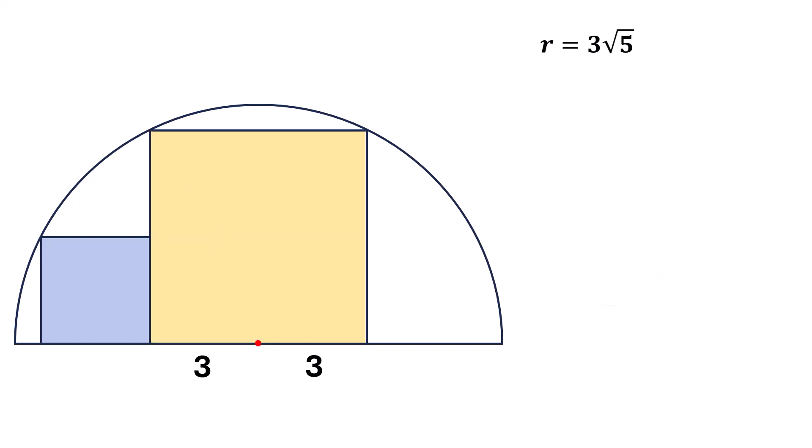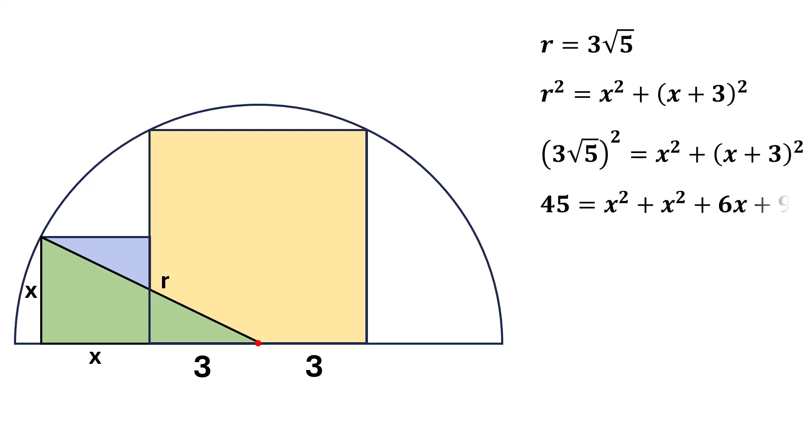Suppose the length of the small square is x. This line represents the radius of the circle. Let's call it r. Now, applying the Pythagorean theorem to this green triangle again, we get r squared equals x squared plus x plus 3 squared. Now, substituting the value of r, we get 3 times the square root of 5 squared equals x squared plus x plus 3 squared. Or, 45 equals x squared plus x squared plus 6x plus 9.